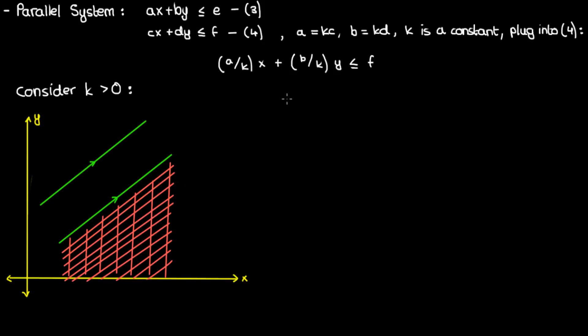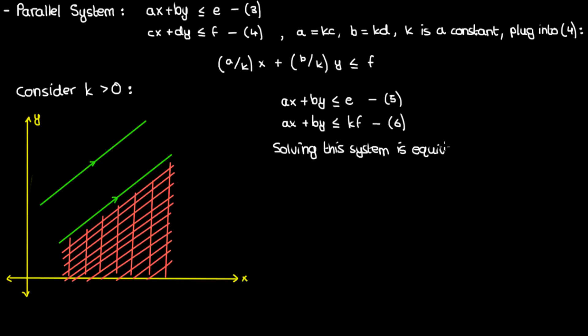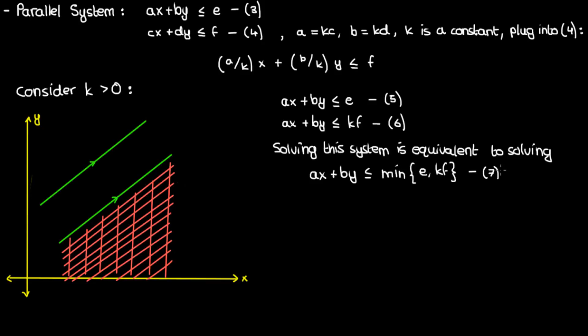In terms of our inequalities, for the first inequality ax plus by is less than or equal to e, and for the second inequality ax plus by is less than or equal to k times f. Solving the system is pretty simple: we just have to find the combination of points x and y such that ax plus by is less than or equal to the minimum of e and k·f. If ax plus by is less than the minimum of these two, then it's automatically less than the non-minimum quantity, so we've solved the entire system with a single inequality.